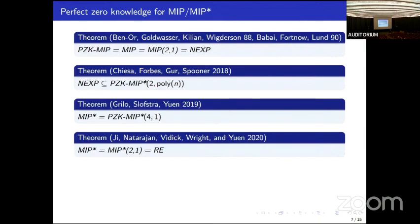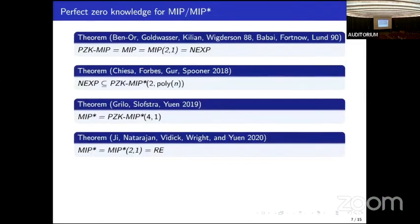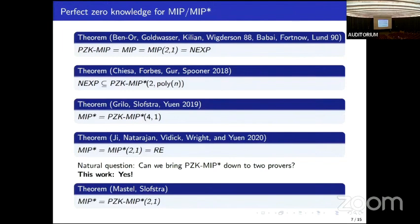Stunningly, in 2020, Gene, Eterogen, Wittig-Wright, and Ewan showed that MIP star is equal to RE. And also, for our purposes, it's important that two provers in one round is enough to capture the whole class. The difference between two and one on the last two entries in this slide prompts the question, can we bring perfect zero knowledge MIP star down to two provers and still capture the whole class? And the answer in this work is yes. We show that PZK MIP star with two provers in one round of interaction is equal to all of MIP star.